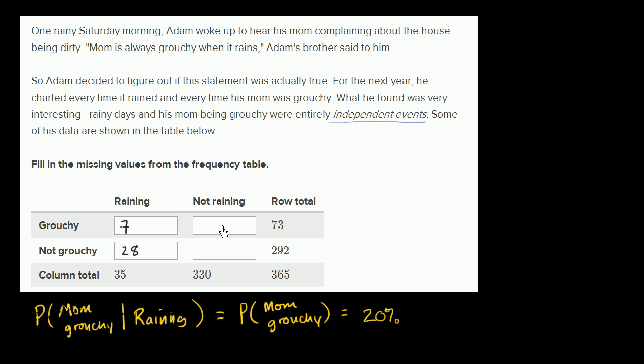66, and we could just take 292 minus 28, which is going to be 264. Do the numbers all add up? Yes, 66 plus 264 is 330.